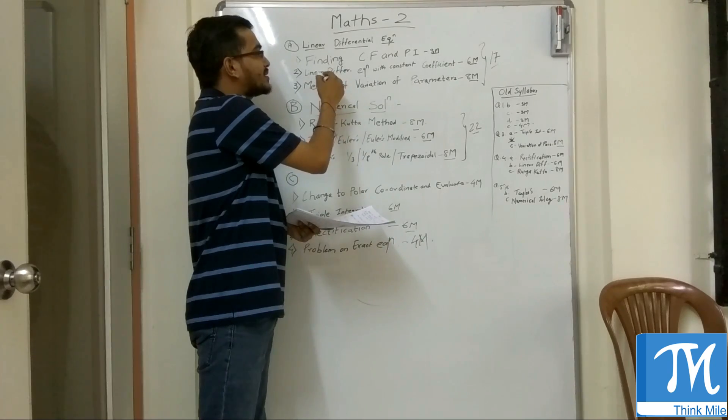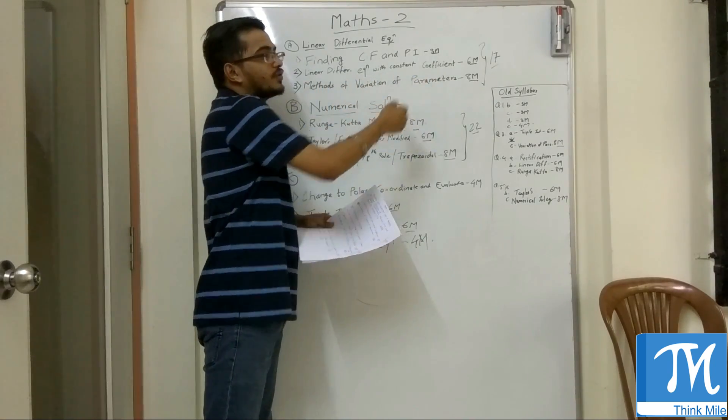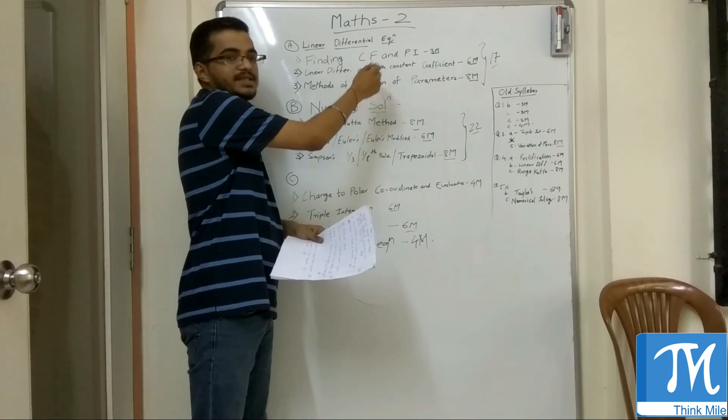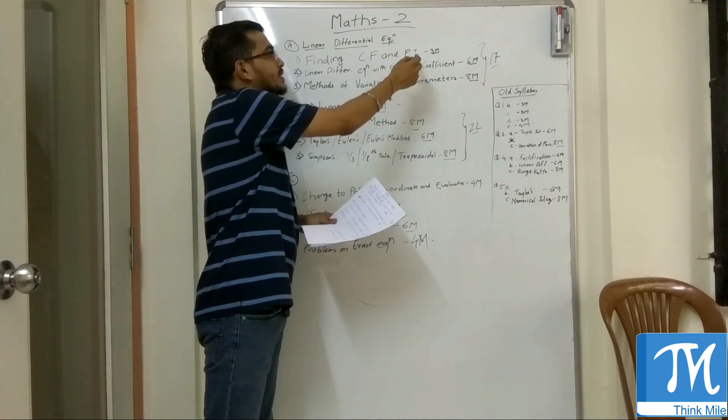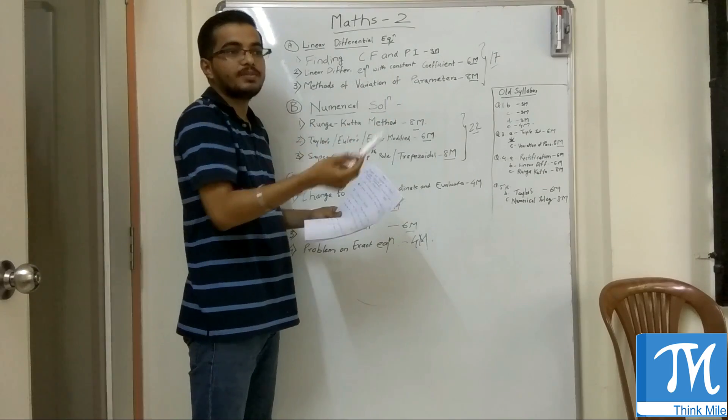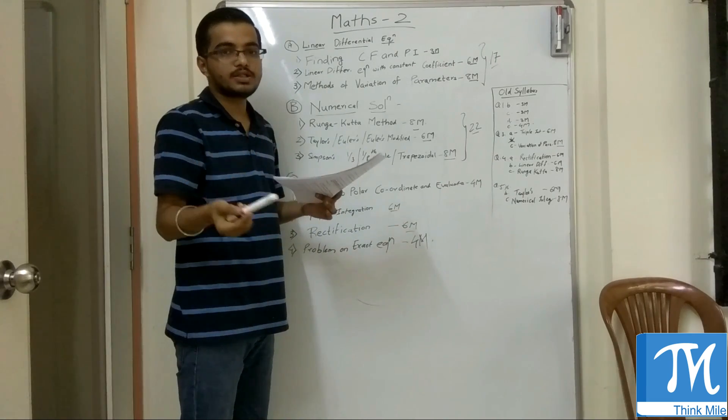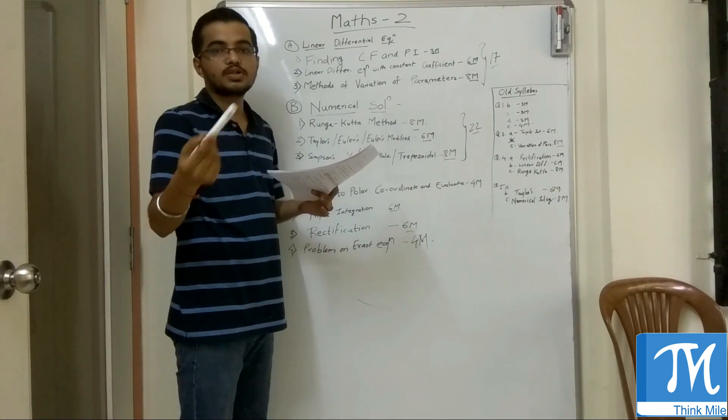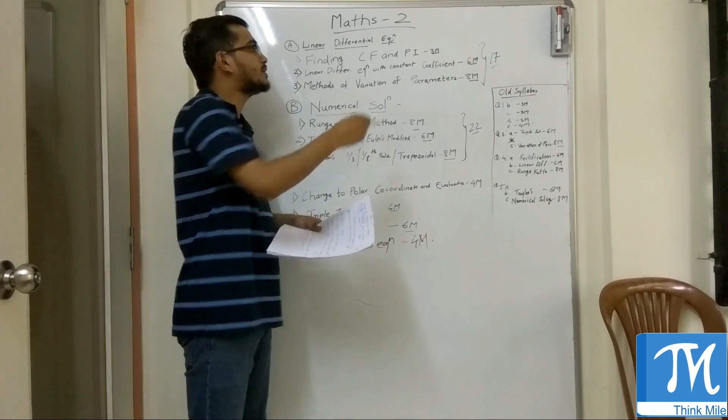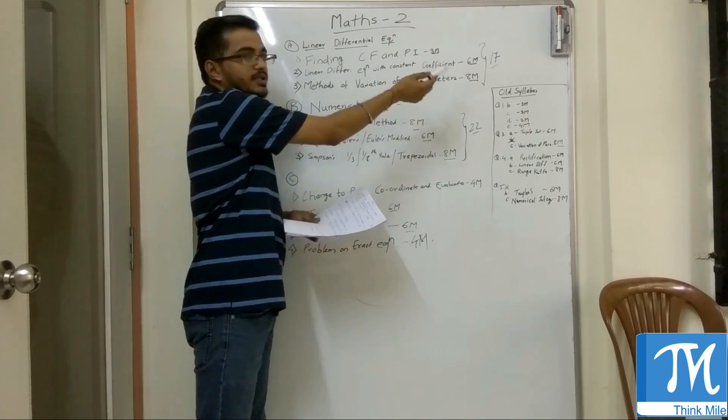Second question is on differential equation with constant coefficients. In this case also you have to find CF and PI, but in this case PI is not 0, it will be some constant maybe x, or e raised to x or sin x positive. There are different types of examples on this. A question on that can be asked for 6 marks.